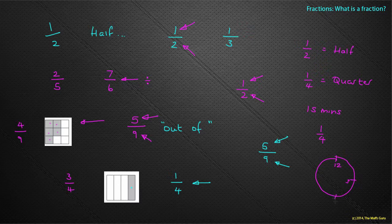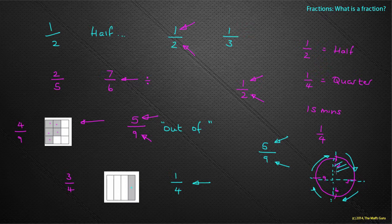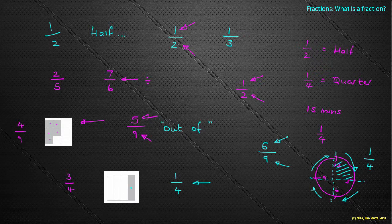Here is three o'clock, six o'clock, and nine o'clock. What we notice is we can split our clock into four equal pieces: the time between 12 and 3, between 3 and 6, between 6 and 9, and between 9 and 12. If I have one section, I've got one section out of four, or a quarter of an hour, because I can split my clock up into quarters.